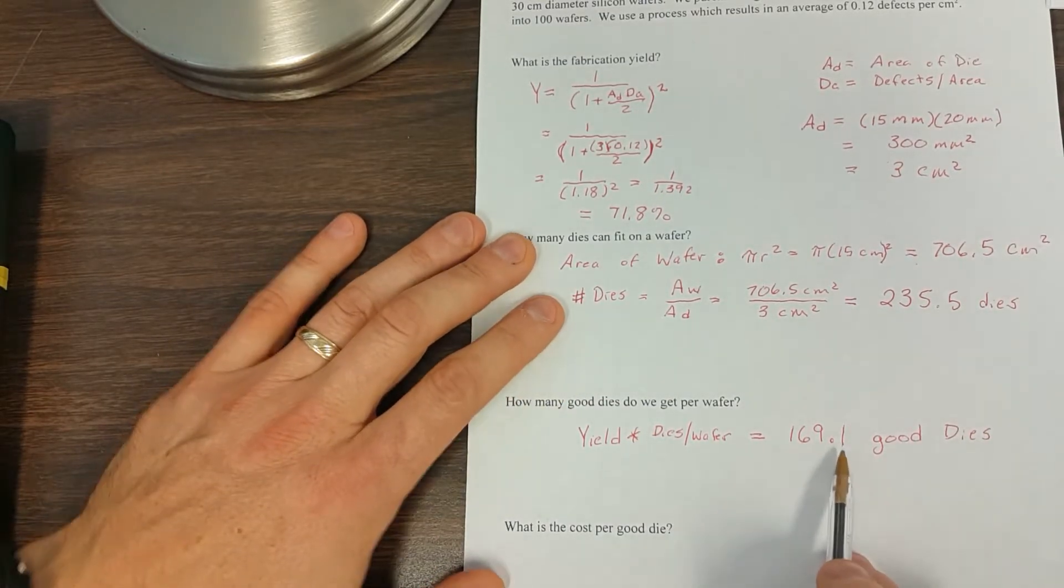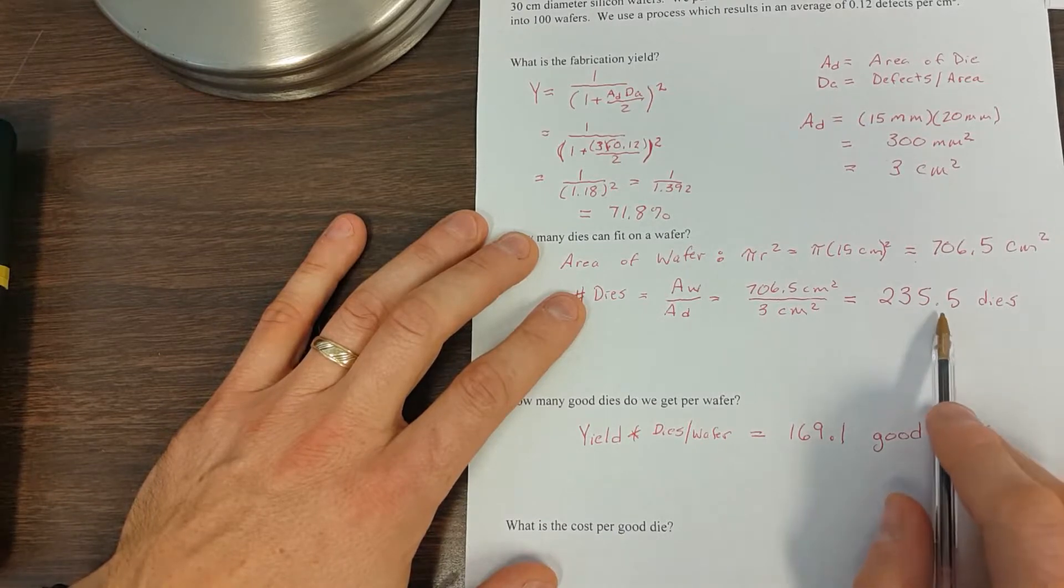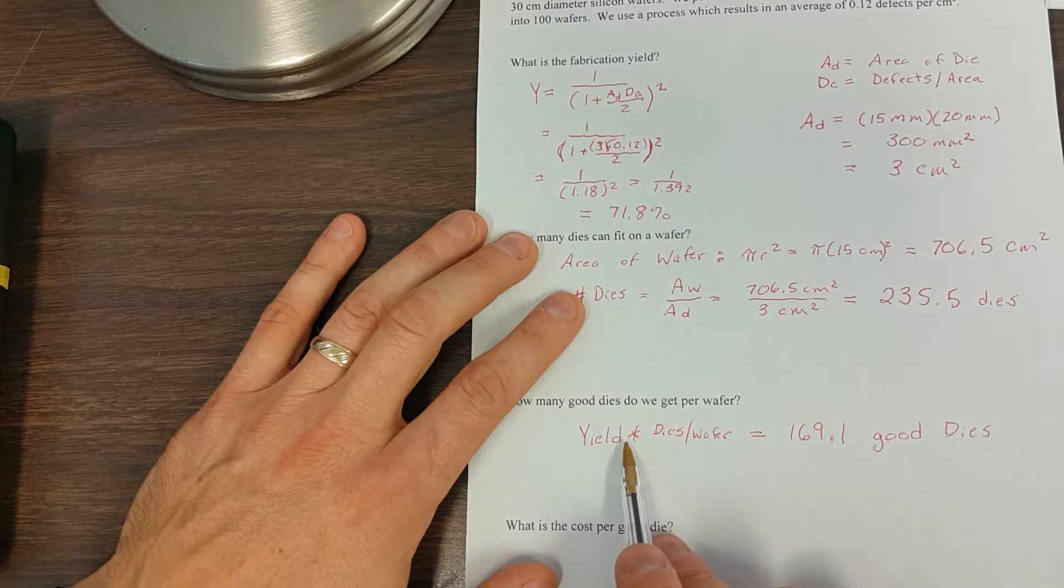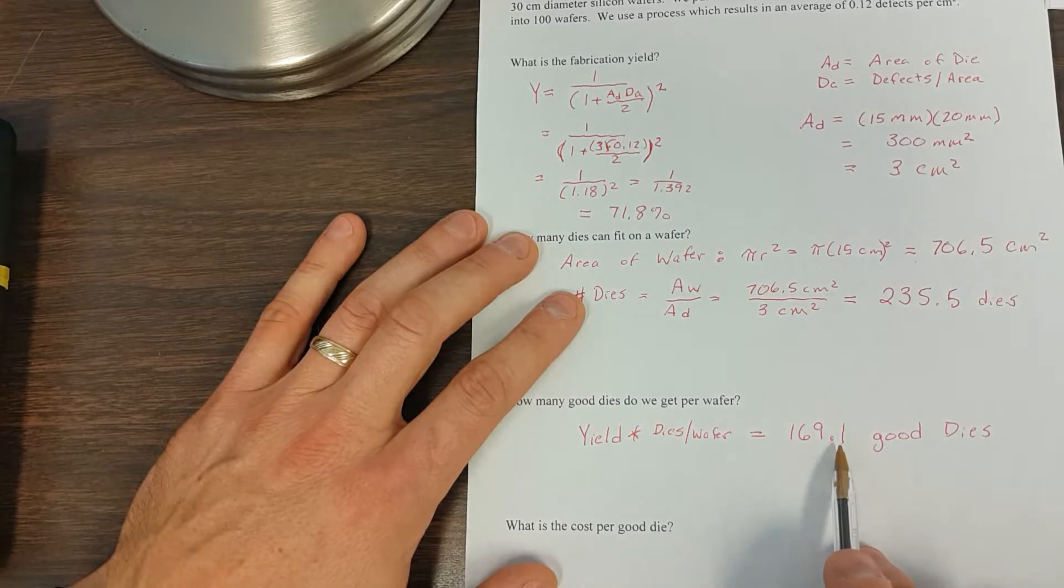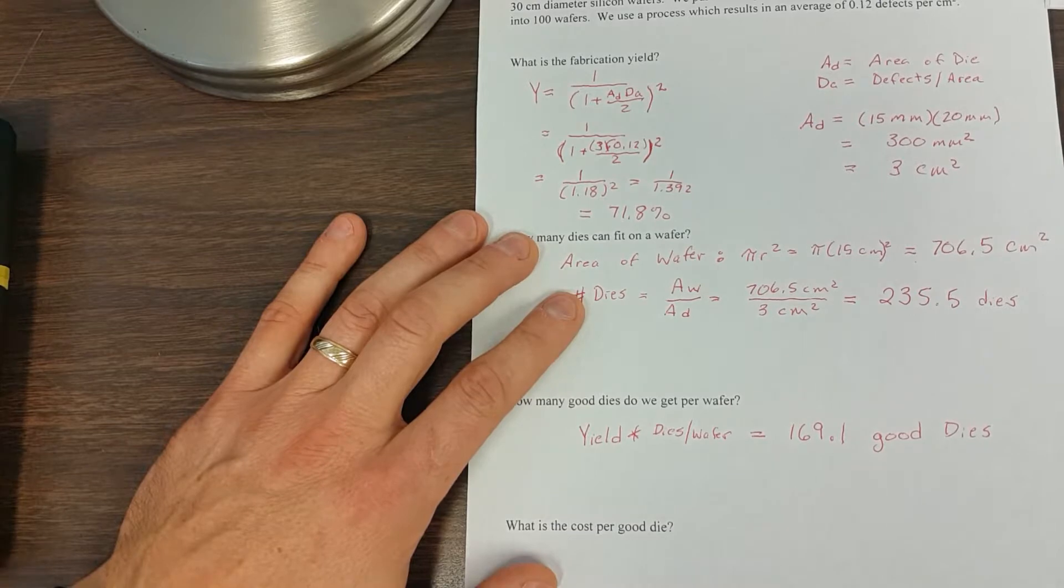At this point, though, it's important. Even though dies come in whole numbers, when we talk about the yield, that's an average yield. So if we're making 1,000 different wafers, the yield is just going to be on average. So it does make sense to say, on average, we have 169.1 good dies, because this is an average or an expectation value of what we get.